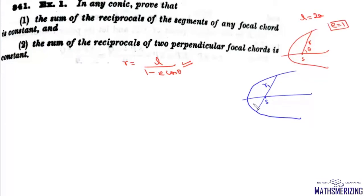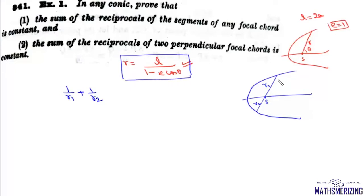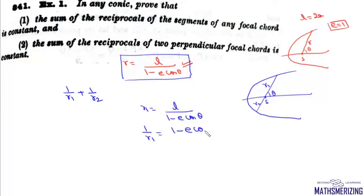Say the two segments are R1 and R2. We need to show that 1/R1 + 1/R2 is constant. We know the equation of any general conic is R = L/(1 - E·cosθ). If we take this angle as θ, we can write R1 = L/(1 - E·cosθ), and rearrange it as 1/R1 = (1 - E·cosθ)/L.